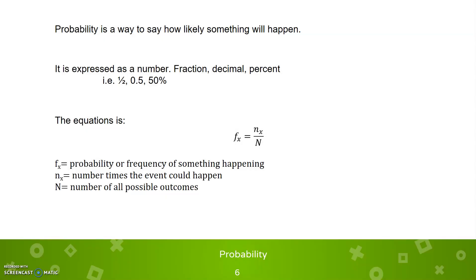Probability is a way to express the guess of how likely something is going to happen. This is usually expressed in a fraction, decimal, or percentage, like one-half or 0.5 or 50%. And the equation is this: The probability is the number of events that could happen divided by all the possible combinations of happening.